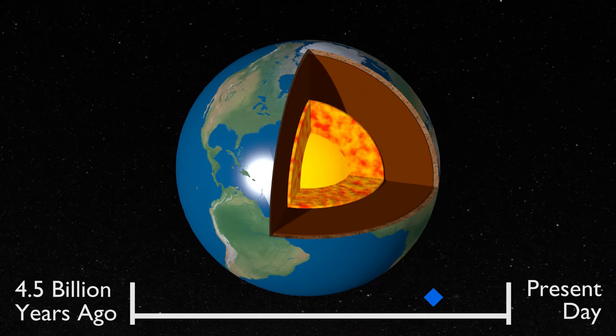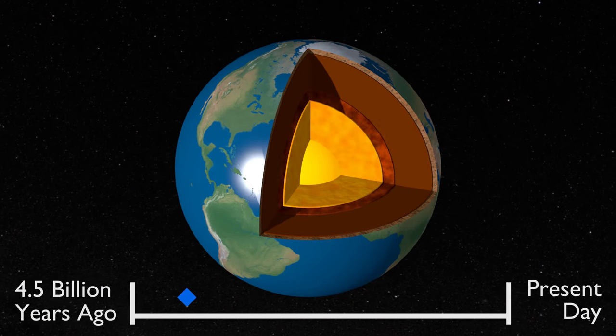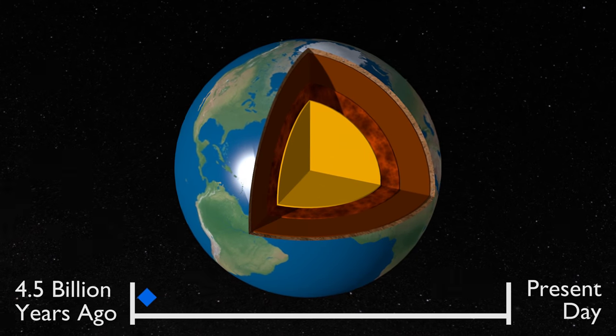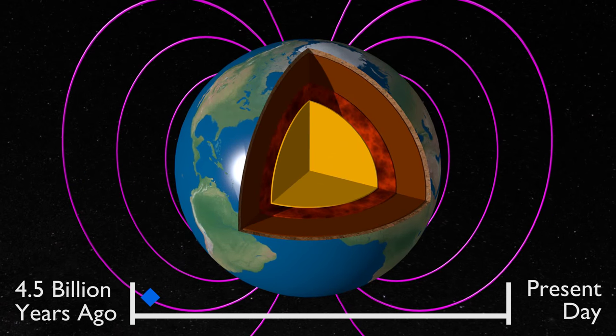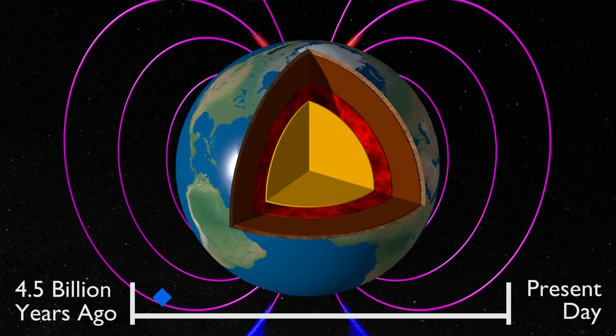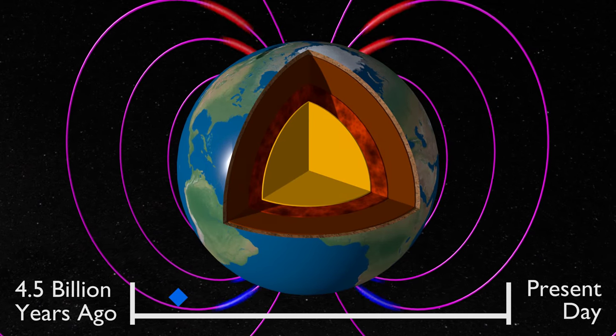But new evidence suggests that the ancient magnetic field may actually have originated from a giant magma ocean deep inside the mantle that existed between 4.5 and 2.5 billion years ago.